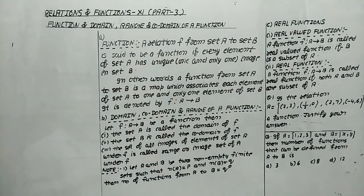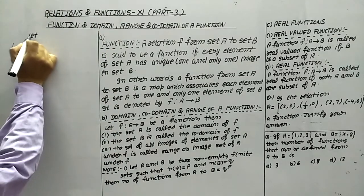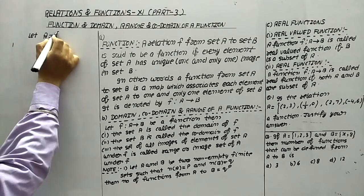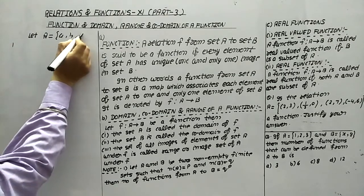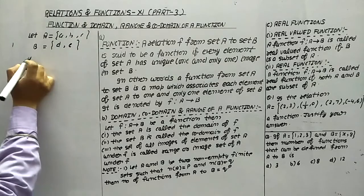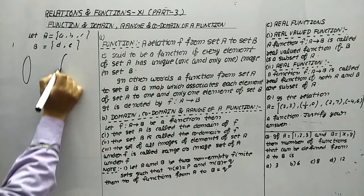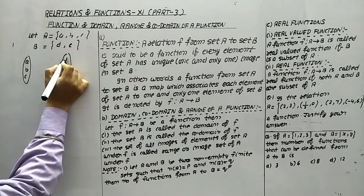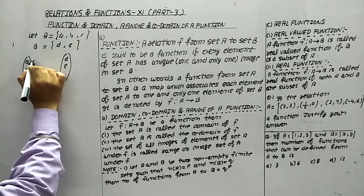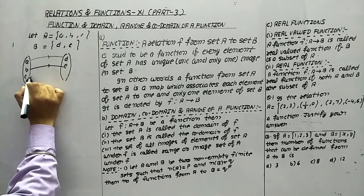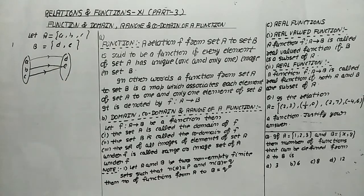Let's take one example to make it very clear. Let I have a set A with elements A, B, C and a set B with elements D and E. Now if I draw one mapping: A to D, B to E, and C to E — in this case I can say this is a function.